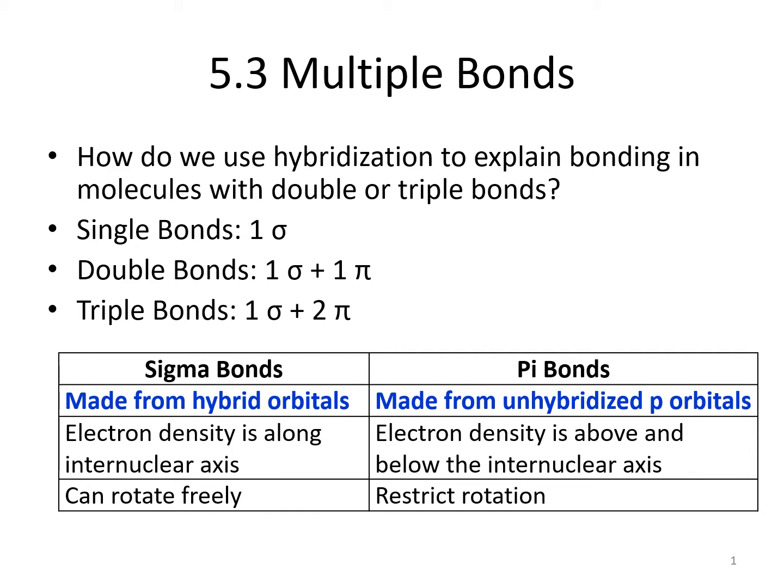Double and triple bonds contain pi bonds. Pi bonds are made from unhybridized p orbitals. The electrons in these bonds can be found above and below the internuclear axis. Pi bonds restrict rotation — since they stick up and down, they block the bond from rotating.